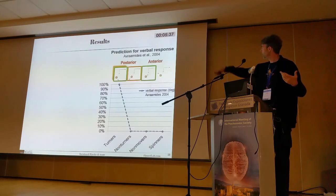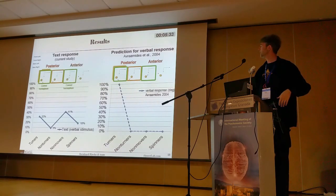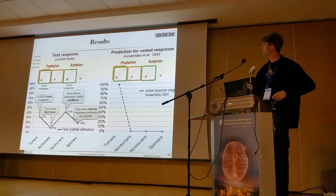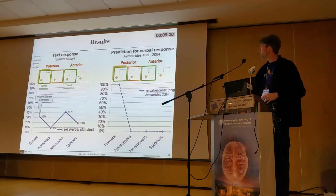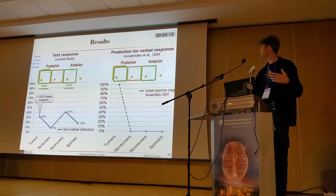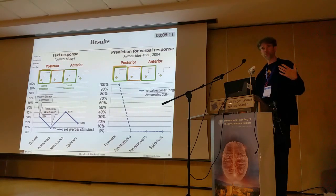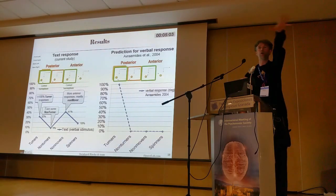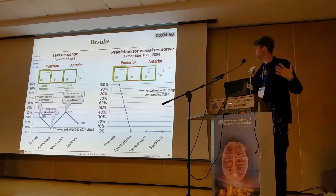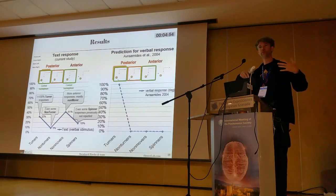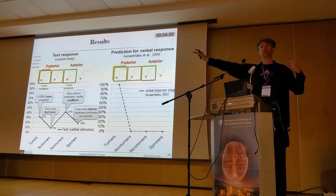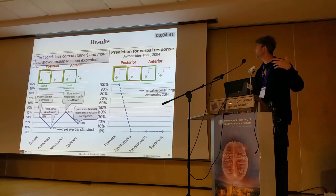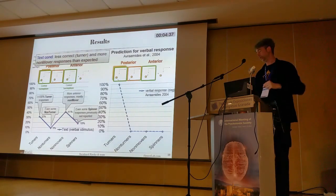So what did we find? For the verbal response comparison, we expected a lot of turners, and in our study we didn't quite find that. We still found a fair amount of turners, but also some non-turners in the verbal condition, which we didn't quite expect. There were a lot of what we call non-mover responses — people who pointed to the frontal hemisphere, still the correct hemisphere, but to the front, which is hard to explain. And even some spinner responses — people who pointed exactly in the opposite direction — which is really hard to understand.